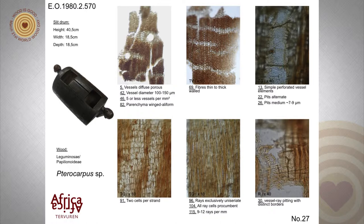Another example is this slit drum, extremely important for traditional African cultures. Many drums are carved from Pterocarpus soyauxii or one of the other Pterocarpus species. With this type of drum, messages could be spread quite fast in the past — the drums were established on the riverbank, and it was possible to produce two types of sounds: a high-pitched female sound and a low-pitched male sound — allowing messages to spread quite quickly.